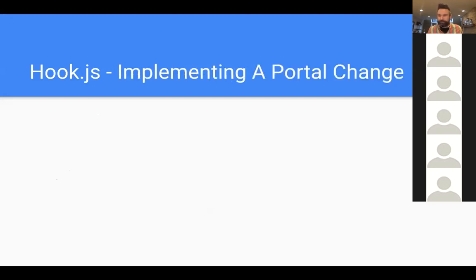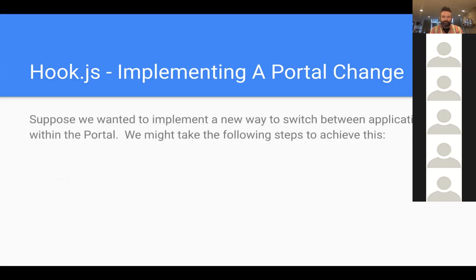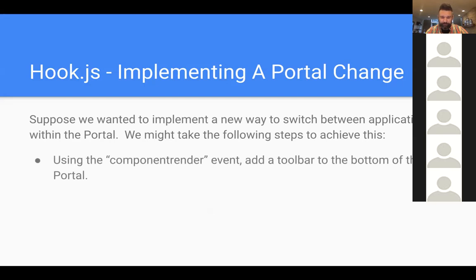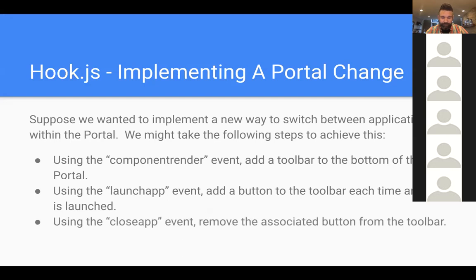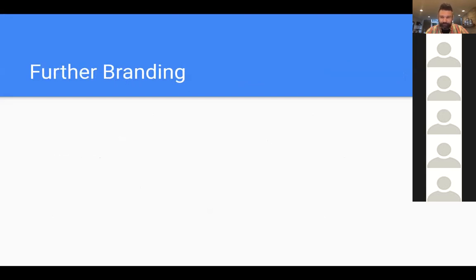As an example of implementing a portal change: suppose you wanted a Windows-style taskbar at the bottom. You'd use the component render event to add a toolbar to the bottom of the portal, then hook into launch app to pull the app name and add a button with that name to the toolbar, and when the app is closed you'd remove its button from the toolbar.